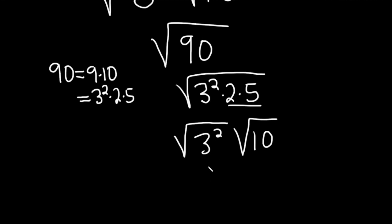And whenever you have the square root of 3 squared, you're just going to get 3. These cancel. And then you have the square root of 10. And so that would be the final answer in this particular problem.